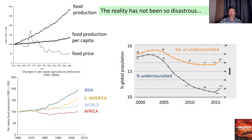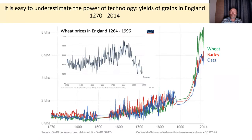The number of undernourished people in the population also significantly declined. From 2000 to 2015, the absolute number of undernourished people fell despite increasing global population. The percentage of the undernourished population went from 15% to 10%, so roughly one-third of undernourishment was eliminated.